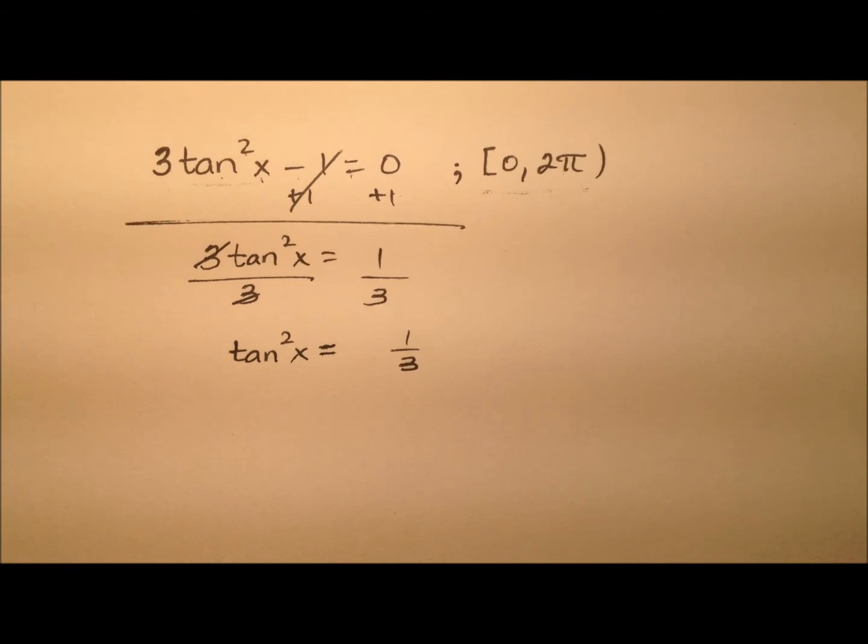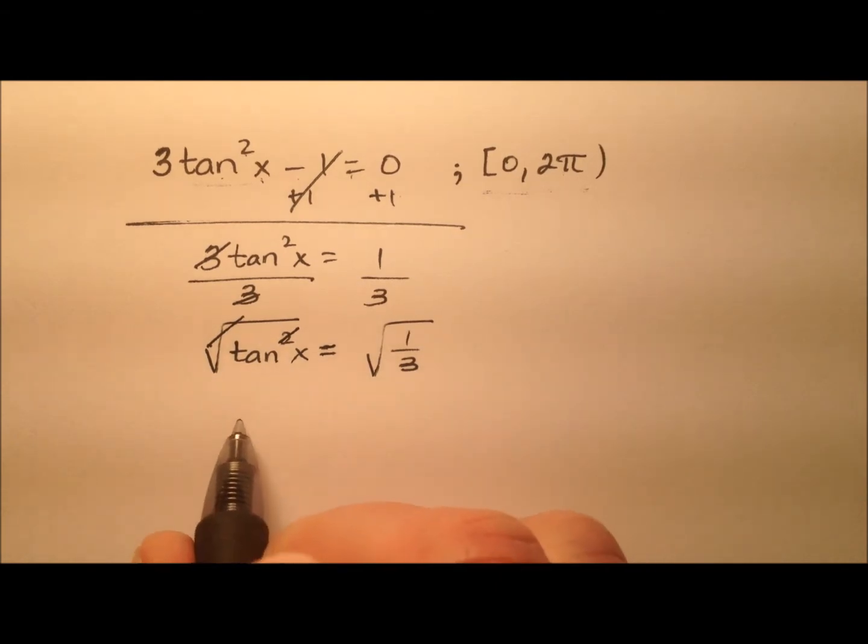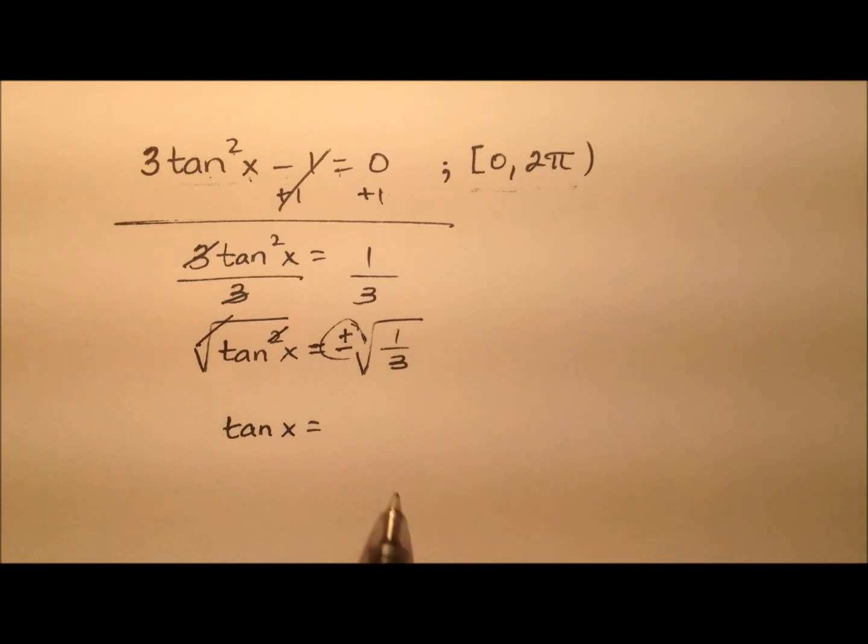Well, let's go ahead and take the square root of both sides so we can get rid of that square and get the tangent x all by itself. But remember, when we do so, this non-perfect square side, I have to include a plus or minus with it. So we actually have plus or minus the square root of 1 third.